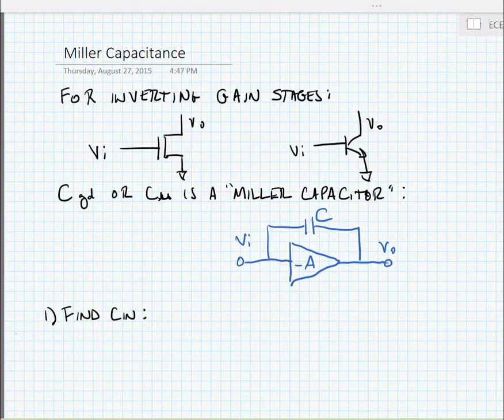Okay, we noted in the prior video that it was a bit difficult to calculate the response or the driving point resistance for the CGD capacitor. And we're going to expressly look at the CGD capacitor and the CMU capacitor for inverting gain stages and something that we can do to simplify the analysis.